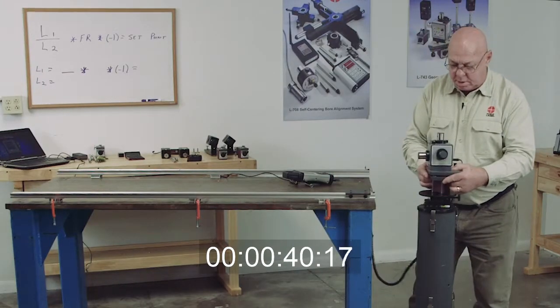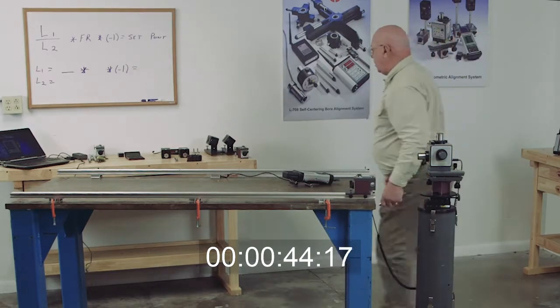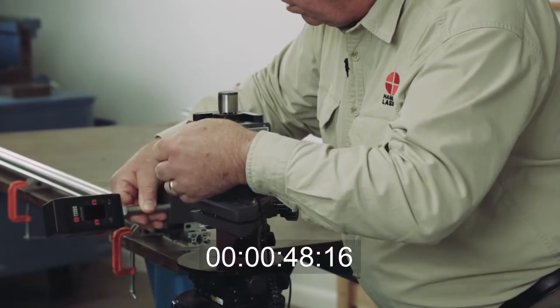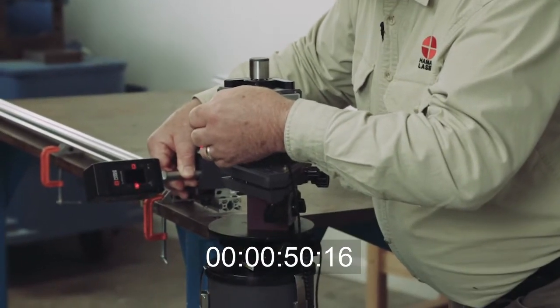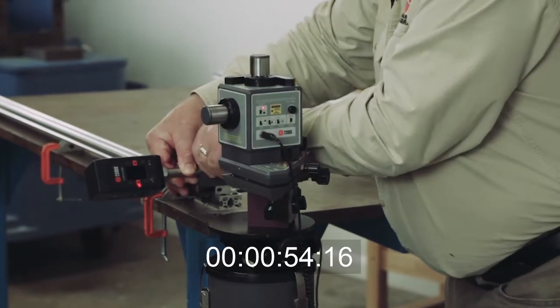First, we'll set the laser on the floor stand. We'll set up a target in the beam. Notice I have the target coming out the side. I'm going to adjust the height of the target so the beam's in the center.